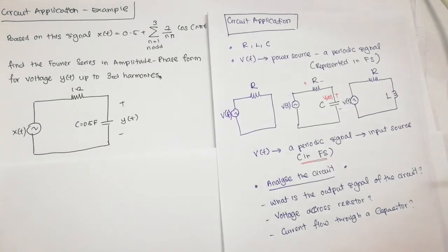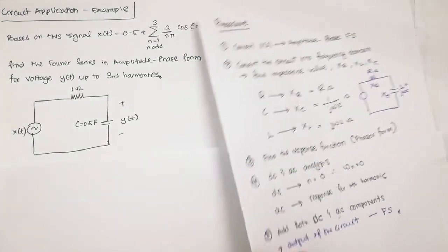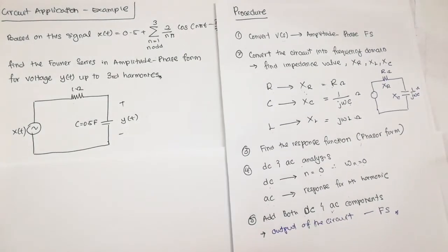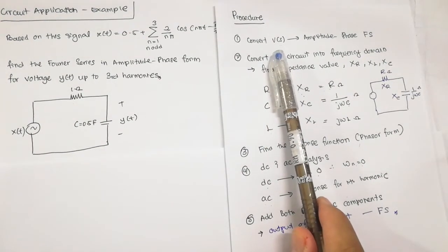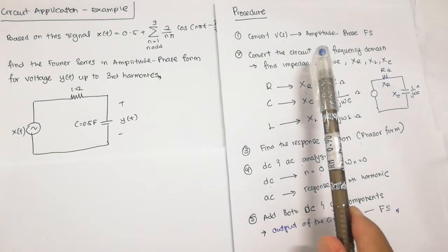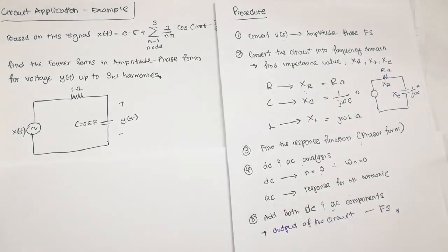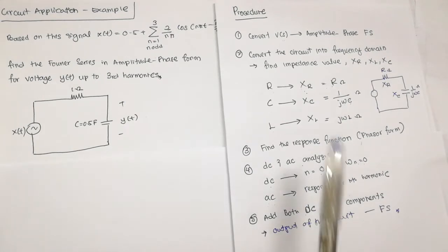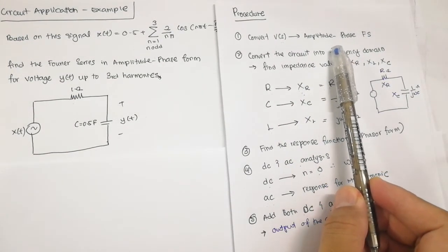In order to do the analysis of this circuit, we need to follow this procedure. We have five steps. The first step is that we need to convert our input signal or input source into amplitude-phase Fourier series form. For example, if your input is in another form of Fourier series, such as complex exponential form or trigonometric form, you need to convert it to amplitude-phase form.